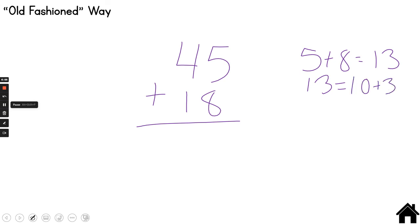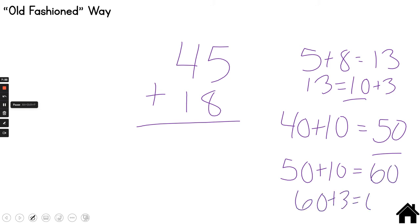Now, this is not 4 plus 1. That is something that is very common to hear. 4 plus 1 is not 4 plus 1. It's actually 40 plus 10. So I'm going to write here 40 plus 10 is 50. Now, I'm going to put the tens together. 50 plus 10 is 60. And then 60 plus 3 is 63.